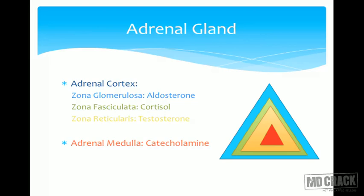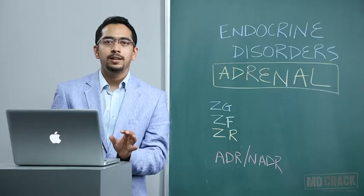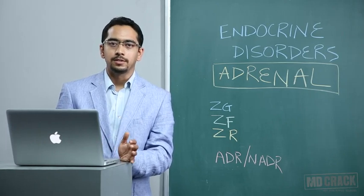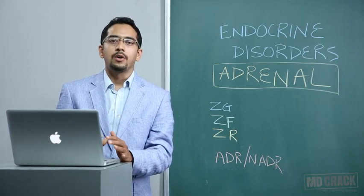Please remember from your anatomy and physiology: the adrenal cortex is made up of three zones — zona glomerulosa, zona fasciculata, and zona reticularis. Zona glomerulosa, the outermost layer, gives rise to aldosterone. Zona fasciculata, the middle layer, gives rise to cortisol or glucocorticoid. Zona reticularis produces the androgens, for example DHEA or testosterone.